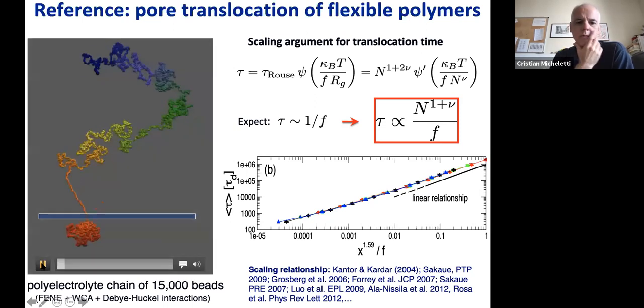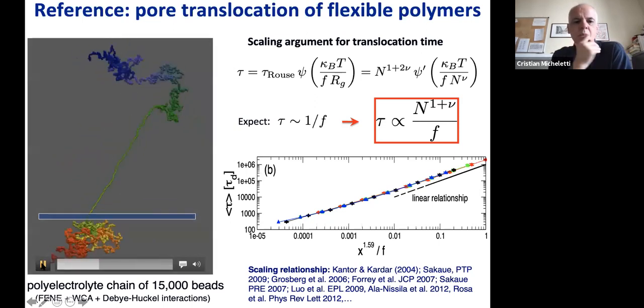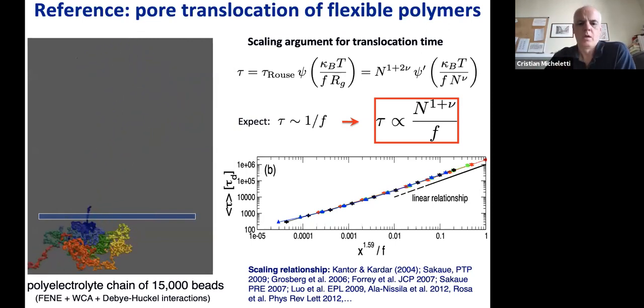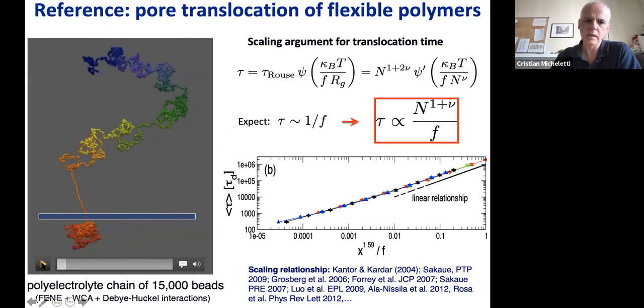You see now we have a globule that is much denser than we started with. This is not because we have a bottom—there is no bottom. Let me start again. This was an equilibrated chain in equilibrium with a certain size.